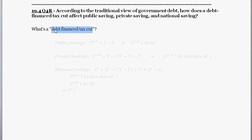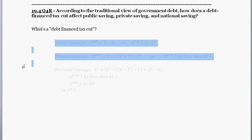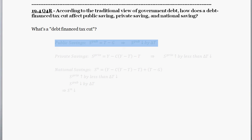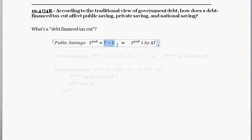So taxes are cut, and how does the government pay for it? It pays for it by taking out debt — that's the only way. It reduces taxes but doesn't affect government spending. Let's work through each of our equations to determine the effect on public savings, private savings, and national savings. First, let's look at public savings.